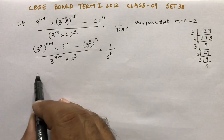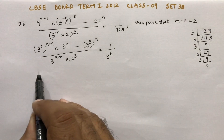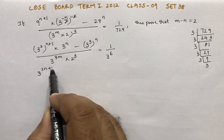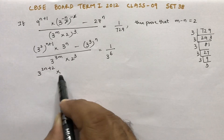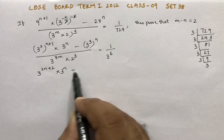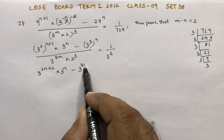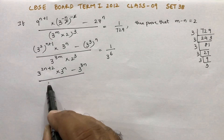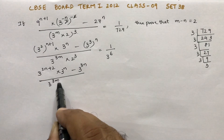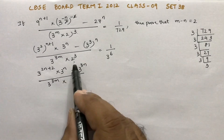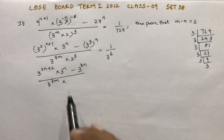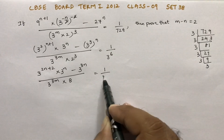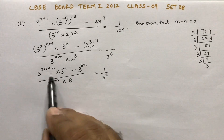Now here, 3 power: if you multiply, 2n plus 2 into 3 power n, minus 3 power 3n, by 3 power 3m into 2 cubed. The value of 2 cubed is 8, equals 1 by 3 power 6.